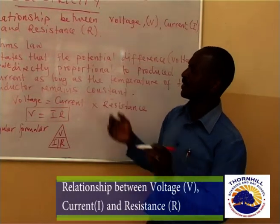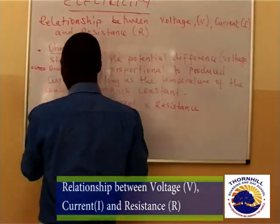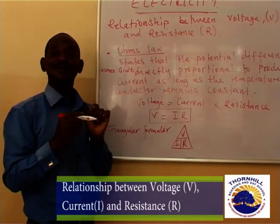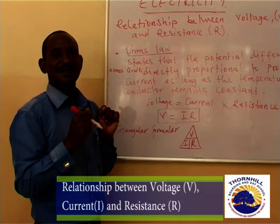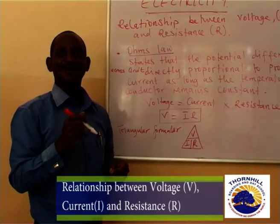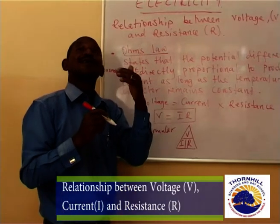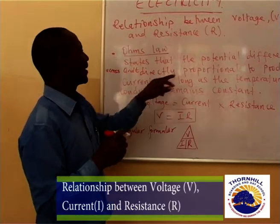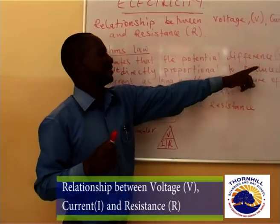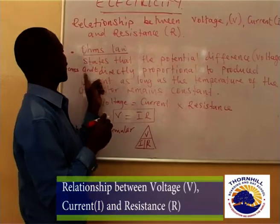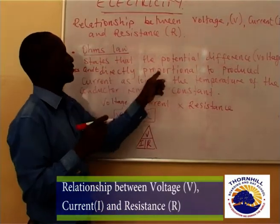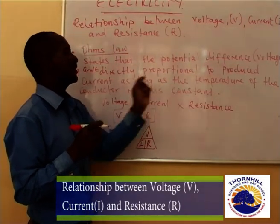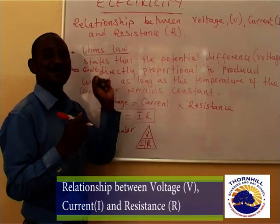So we look at what is known as Ohm's Law. Remember, Ohm was just a scientist who was asking these questions, which became relevant up to now — no wonder we are able to understand the flow of current in our homes. Ohm's Law states that the potential difference, which is the voltage across the circuit, is directly proportional to the produced current, as long as the temperature of the conductor remains constant.